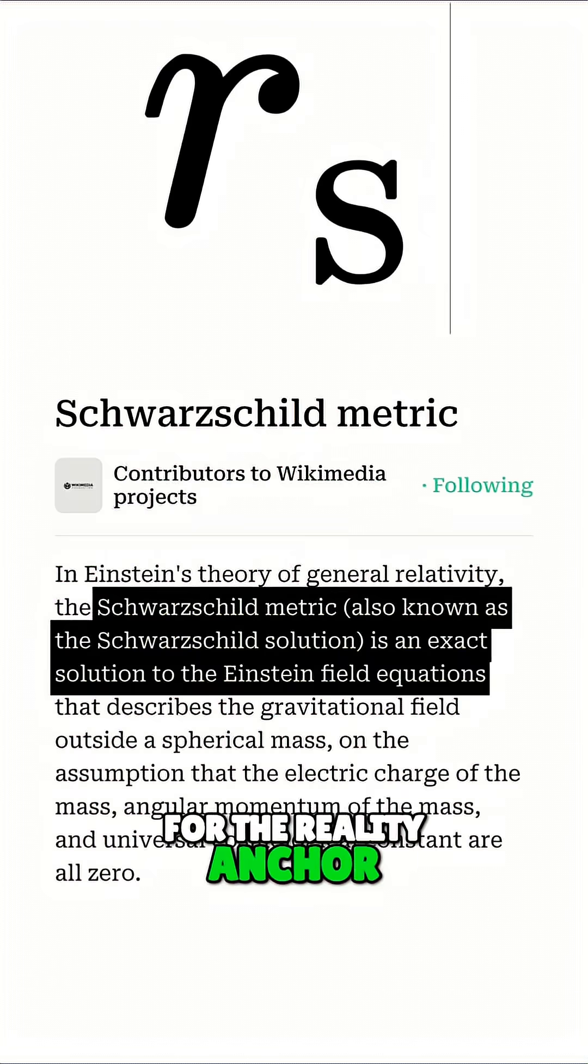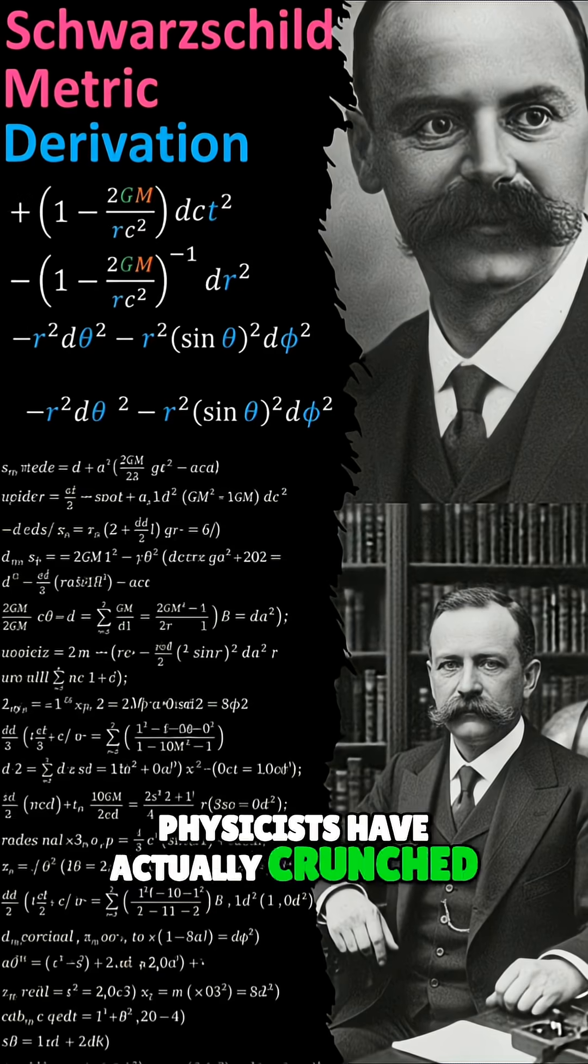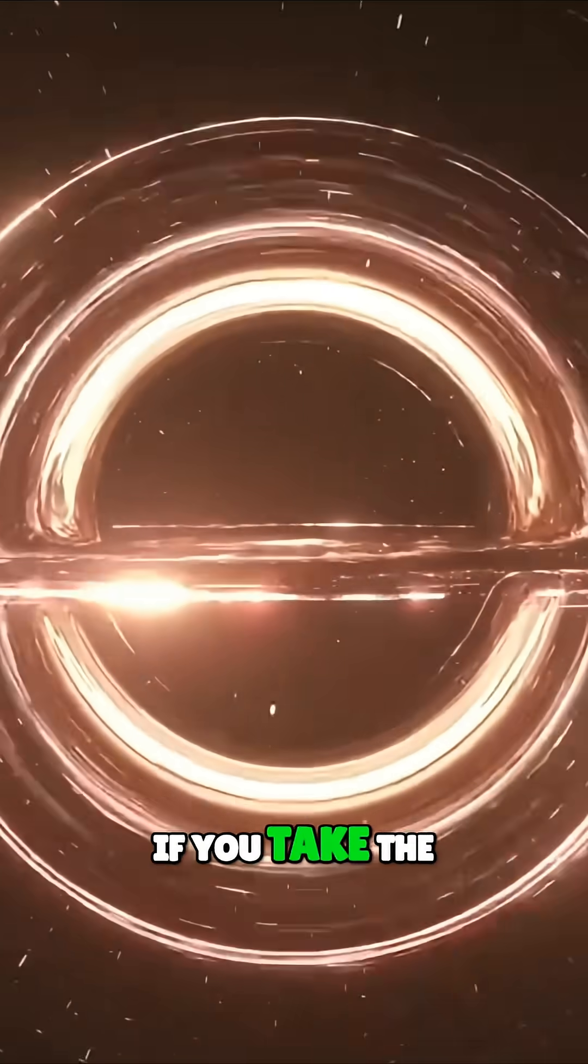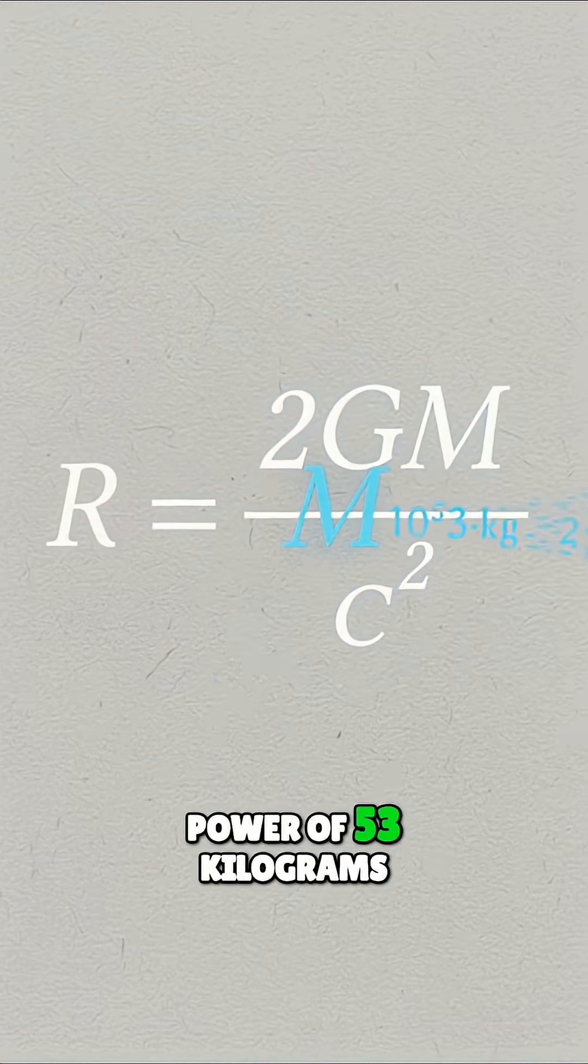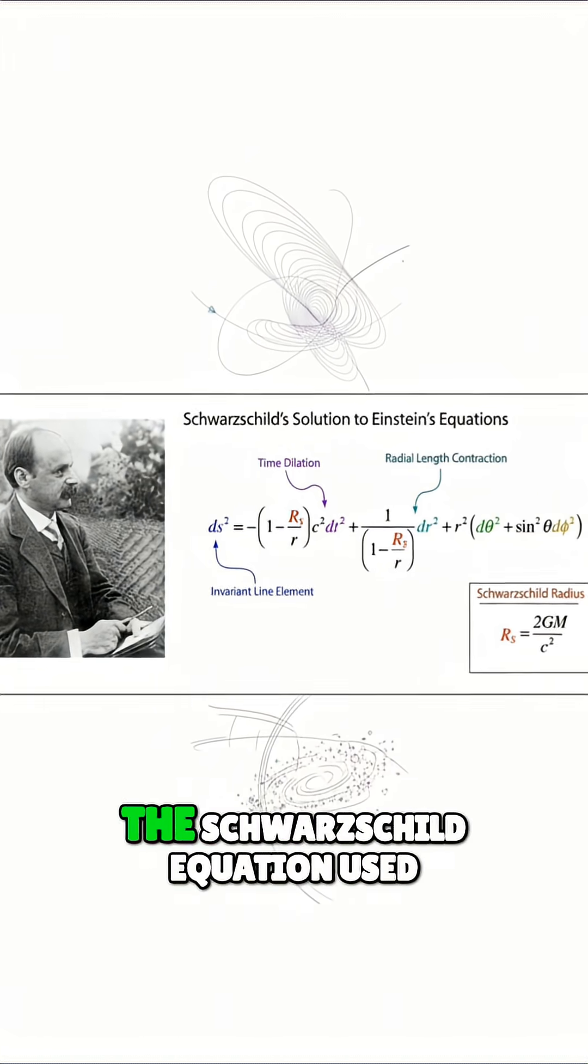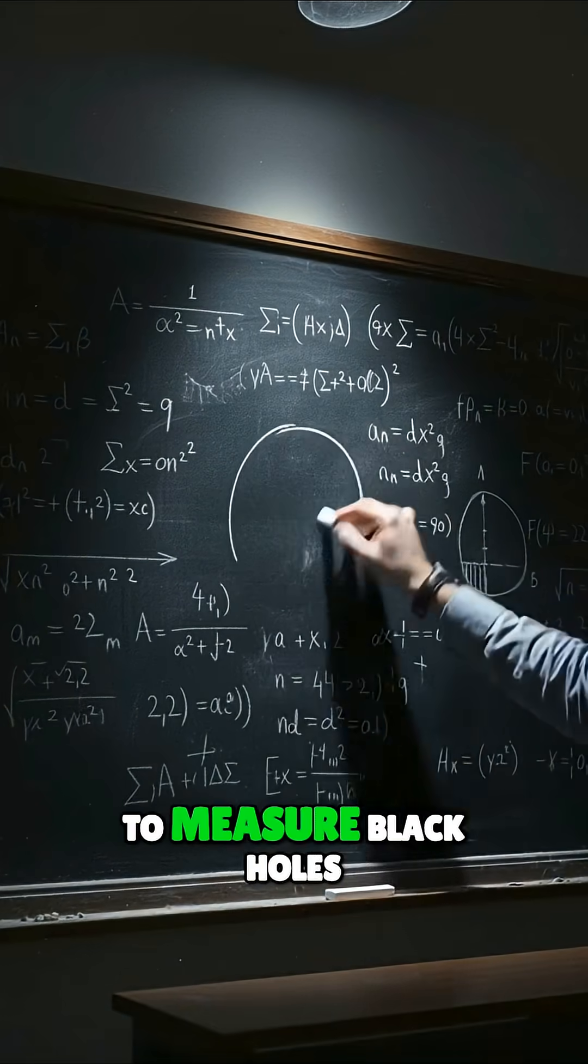Now for the reality anchor. Physicists have actually crunched the numbers on this. If you take the estimated mass of our observable universe, roughly 10 to the power of 53 kilograms, and plug it into the Schwarzschild equation used to measure black holes,